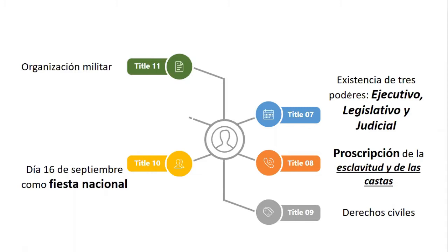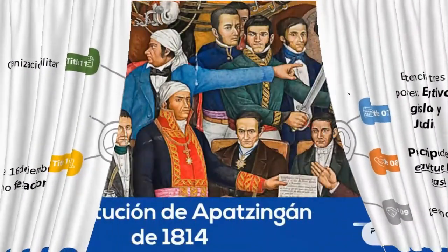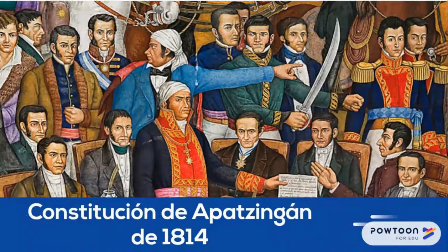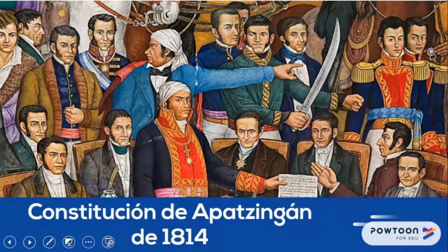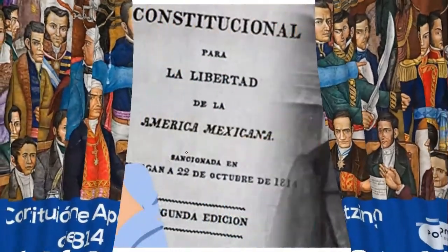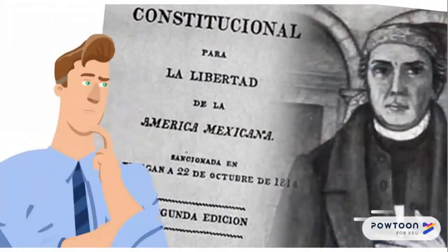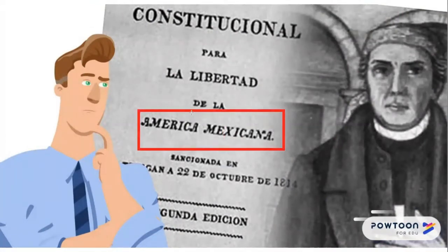Llegamos a otro antecedente importante: 1814 con el Siervo de la Nación, Morelos y Pavón. Morelos no estaba del todo de acuerdo con el proyecto presentado por López Rayón, y escribió una obra llamada Sentimientos de la Nación, que fue base fundamental para el Decreto Constitucional para la Libertad de la América Mexicana. Si se fijan, ya se coloca un nombre a nuestra patria: la América Mexicana. Fue signado el 22 de octubre de 1814.